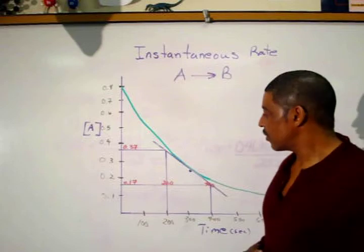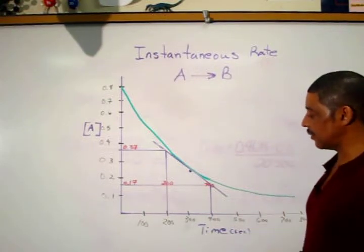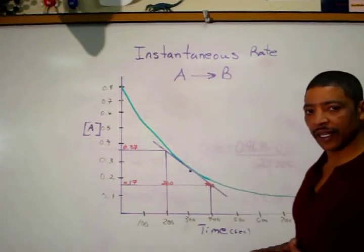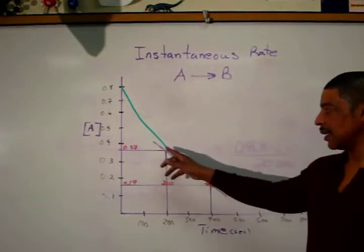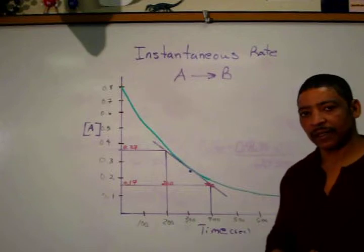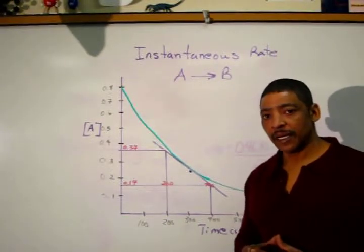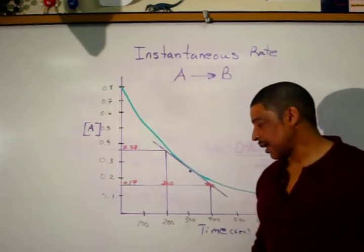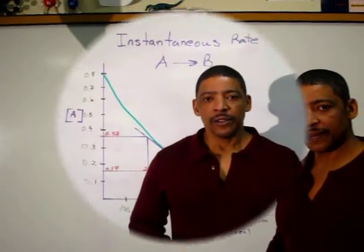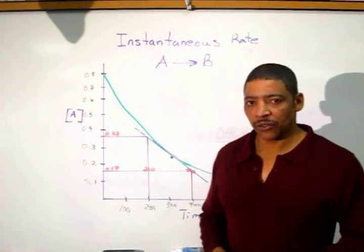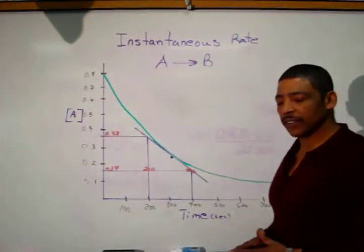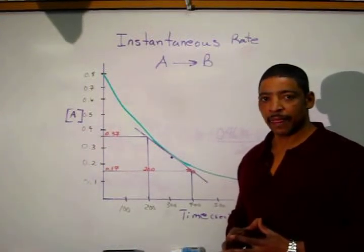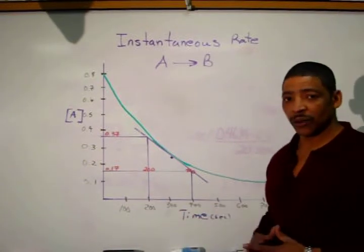Consider this example. Suppose I wanted to find the rate of this reaction at exactly 300 seconds. To calculate the instantaneous rate at 300 seconds, I've simply drawn a line tangent to the curve at that point in time. Now by calculating the slope of this line, I will know the instantaneous rate at 300 seconds. To calculate the slope of this line, I've chosen a time interval from 200 to 400 seconds. Since the slope of a line never changes, the time interval that is chosen is really unimportant.